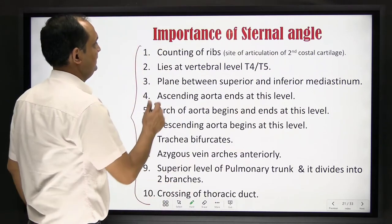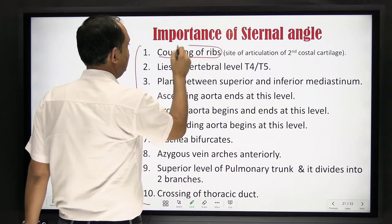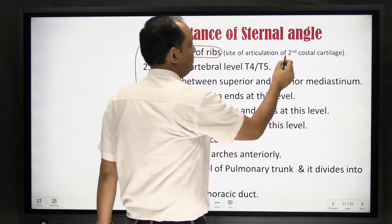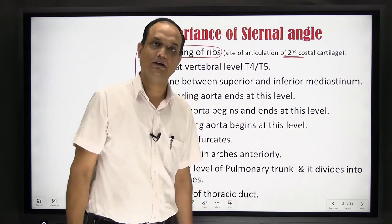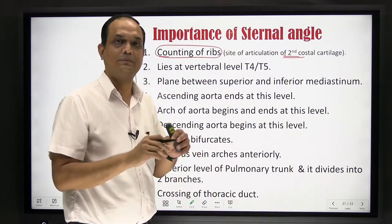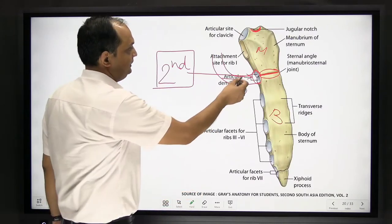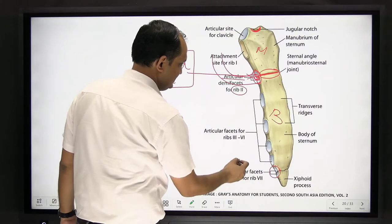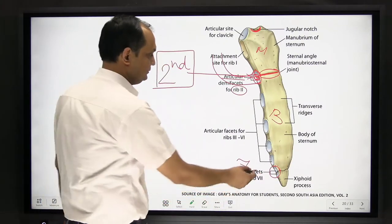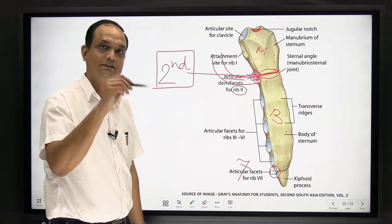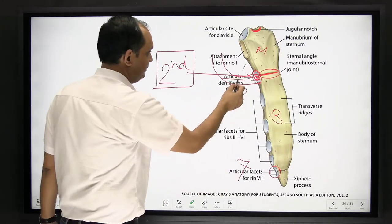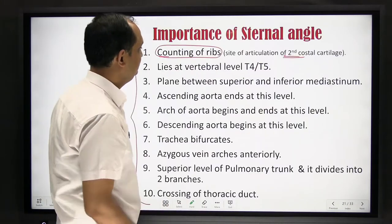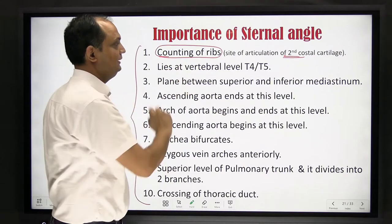The first importance is that we use this as a landmark for counting of ribs. The second costal cartilage is attached here. When we do the counting, we start from second number here, and the last cartilage attached to the sternum is the seventh. The eighth, ninth, and tenth join the seventh. So when we count, we will go in the oblique direction towards the mid-axillary line. This is the first importance — that is the counting of ribs.